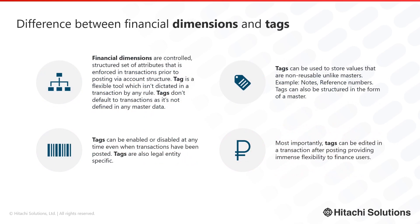Let's look at the main differences between financial dimensions and tags. Financial tags are not available in Financial Reporter — financial dimensions are. Financial dimensions are a more controlled, structured set of attributes enforced in transactions prior to posting via account structure, whereas tags don't follow any such structure or rule. You can simply activate a tag and start selecting it in a journal line, and it does not flow from a master to the transaction. A tag can be enabled or disabled at any point, even when transactions have been posted. Tags are legal entity specific — up to 20 tags can be activated per legal entity. Most importantly, tags can be edited in a transaction after posting, providing great flexibility to finance users.